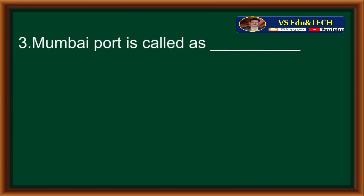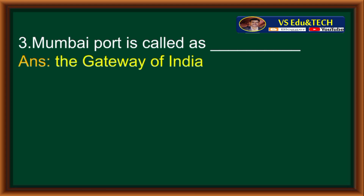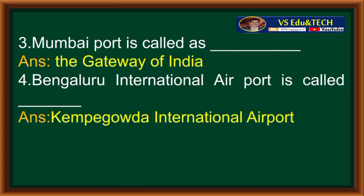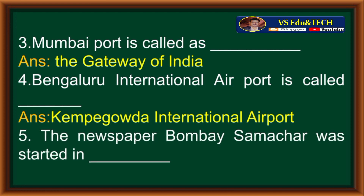Third one: Mumbai port is called as blank. Answer: the Gateway of India. Fourth one: Bengaluru International Airport is called blank. Answer: Kempegoda International Airport. Fifth one: the newspaper Bombay Samachar was started in blank. Answer: 1822.